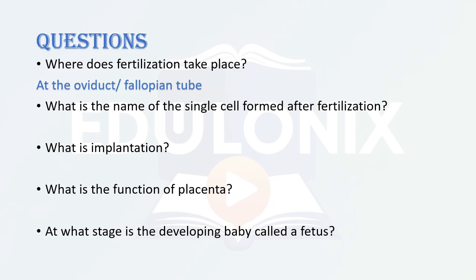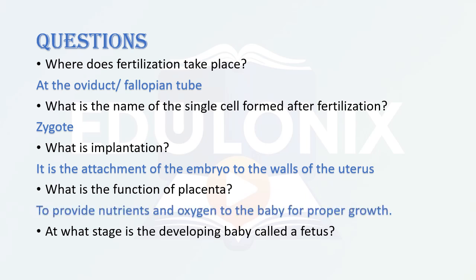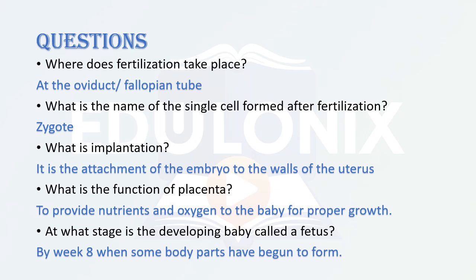Fertilization takes place at the oviduct or the fallopian tube. The single cell formed after fertilization is the zygote. Implantation is the attachment of the embryo to the walls of the uterus. The function of the placenta is to provide nutrients and oxygen to the baby for proper growth. The baby is called a fetus by week eight, when body parts have begun to form. Remember the cycle: zygote → embryo → fetus → baby. This entire process takes nine months.